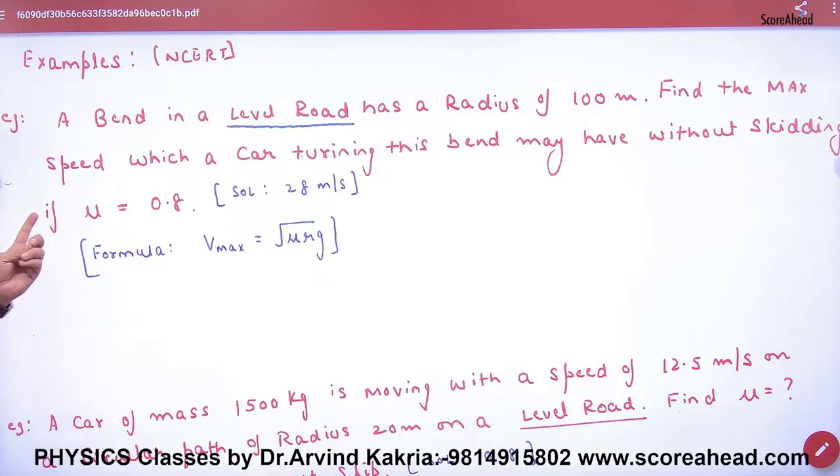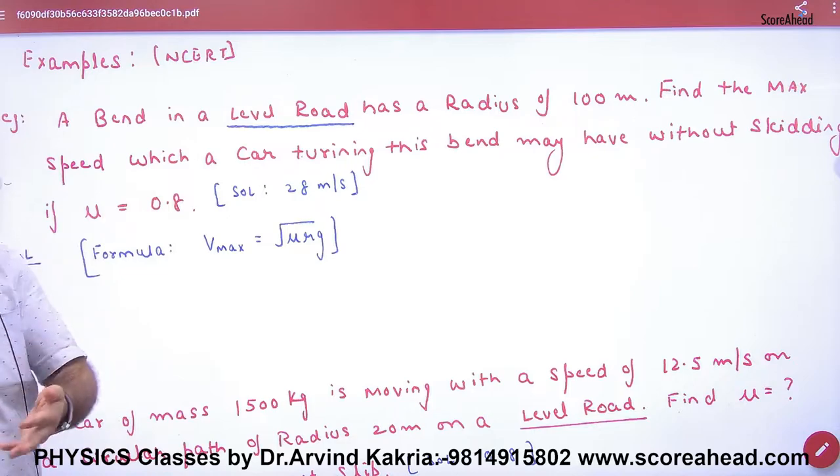First numerical, a bend in a level road. Is this a banking example? What is the level road? Level road is not a banking formula. Level road has a radius of r given. Find the speed which the car will move without skidding.